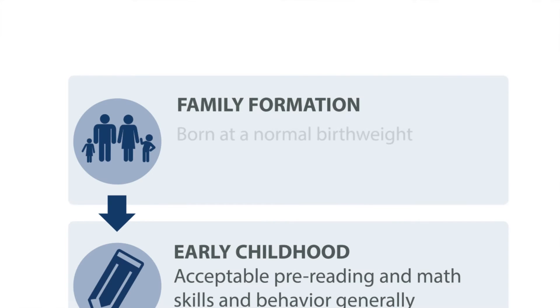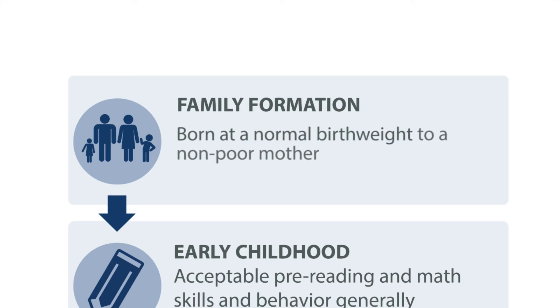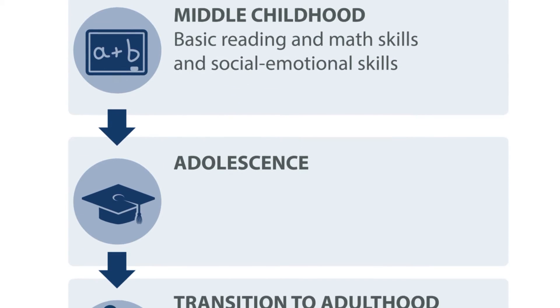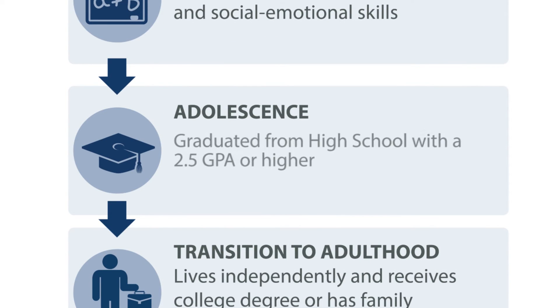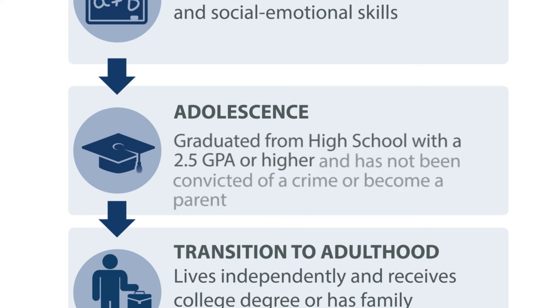For example, if a child is born at a normal birth weight to a non-poor mother with a high school diploma, then he or she is more likely to reach middle class as an adult. By the teen years, if a person has graduated from high school with at least a C-plus average and has not become a parent or been convicted of a crime, then he or she has a better chance of reaching middle class by adulthood.